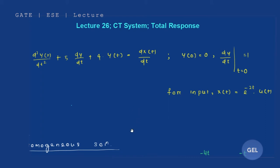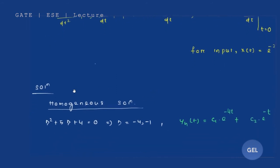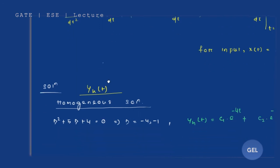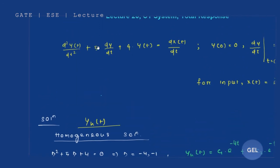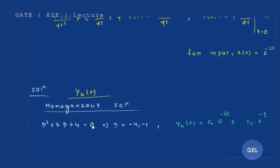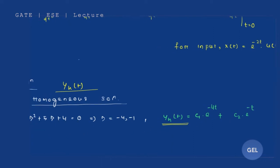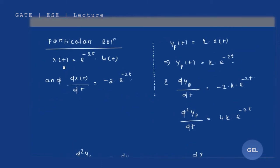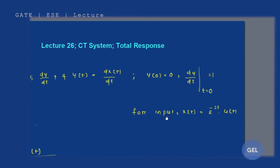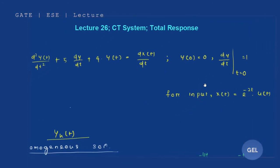Let's quickly finish our normal method: that is the homogeneous solution yh(t). For yh(t), we can write D² + 5D + 4 = 0, so you get D values of minus 4 and minus 1, and you get yh(t) as c1·e^(−4t) + c2·e^(−t). Now let's find the particular solution. The input x(t) is given as e^(−2t). Pause the video and write down this equation.